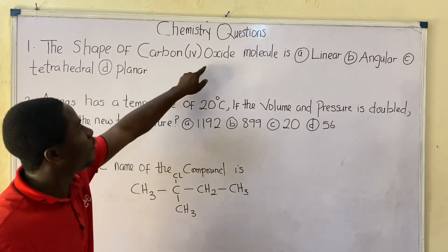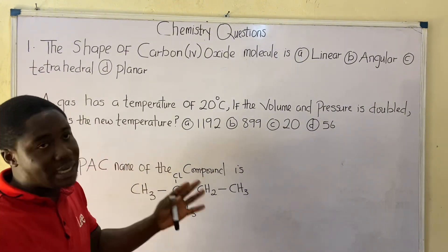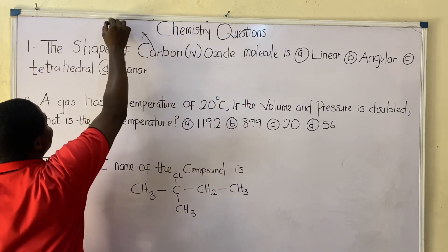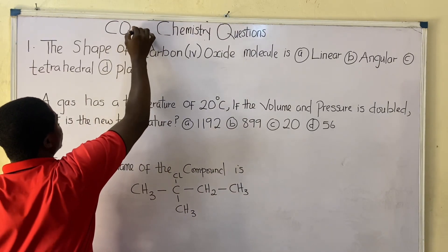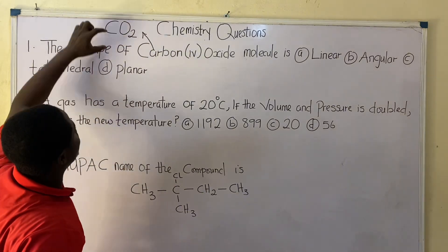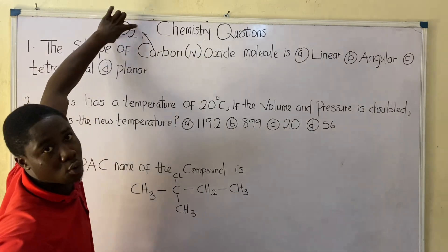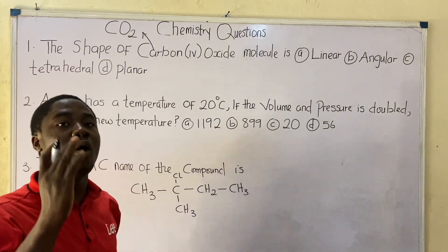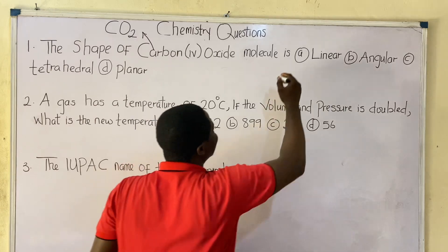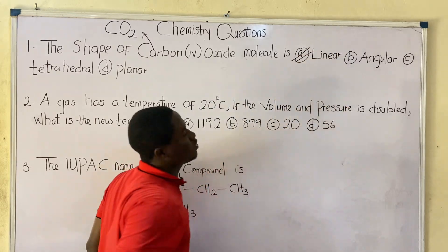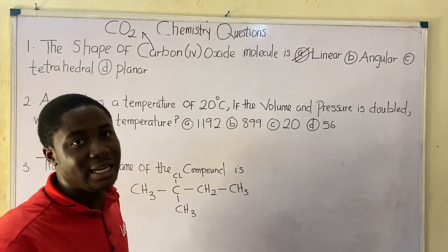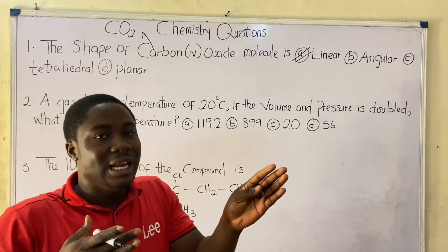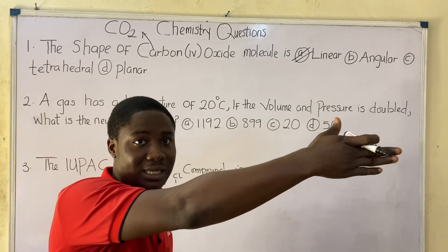The first question asks: what is the shape of the carbon dioxide molecule? The chemical formula for carbon dioxide is CO2. The shape of carbon dioxide is linear — but it's not just about knowing that; you have to know why it is linear. Linear means straight line.